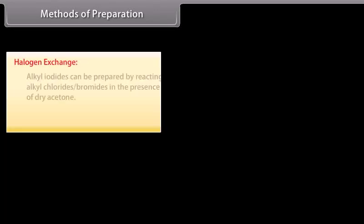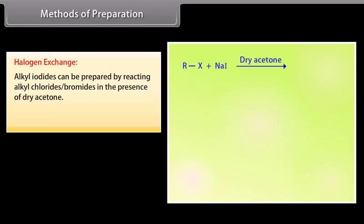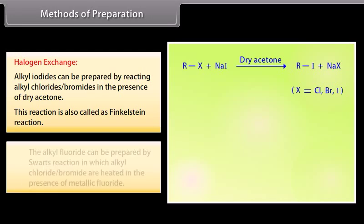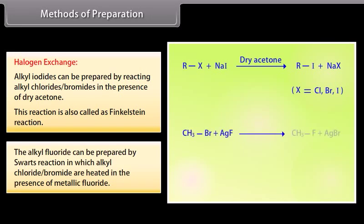Methods of Preparation. Halogen Exchange. Alkyl iodides can be prepared by reacting alkyl chloride or bromides in the presence of dry acetone. This reaction is also called the Finkelstein reaction. The alkyl fluoride can be prepared by the Swartz reaction in which alkyl chloride or bromide are heated in the presence of metallic fluoride.